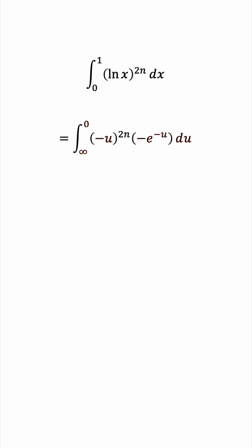Now, let's use this negative sign to reverse the order of integration into the more natural 0 to infinity. And for this negative sign, well, 2n is an even power, so negative u to the 2n is just u to the 2n. Okay, now what?